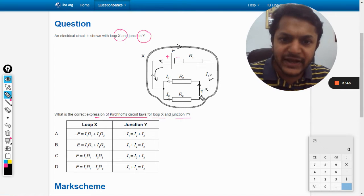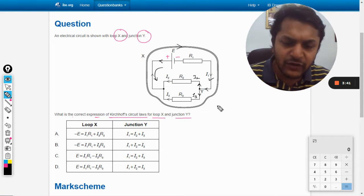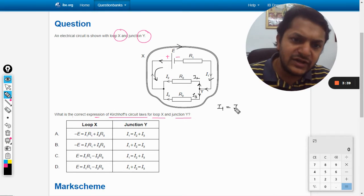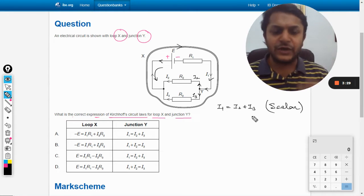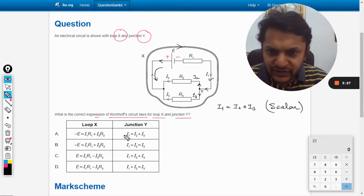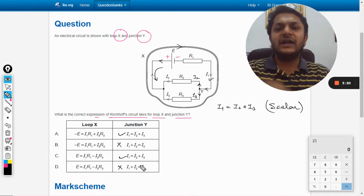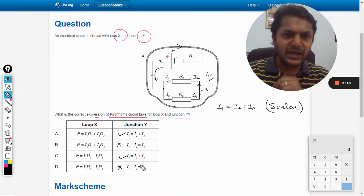And at Y it breaks down into two, so this becomes i2 and this becomes i3. So simple: i1 is equal to i2 plus i3. Current is a scalar quantity so that is why we are using simple algebraic maths for it. So i1 equals i2 plus i3. This is correct and this is also correct, so this is wrong and this is wrong. We have found that two options are correct.